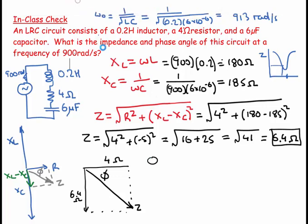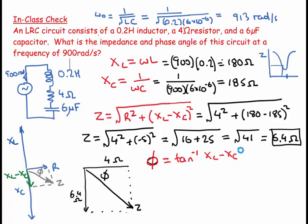The phase angle equals the inverse tangent of XL minus XC over R.